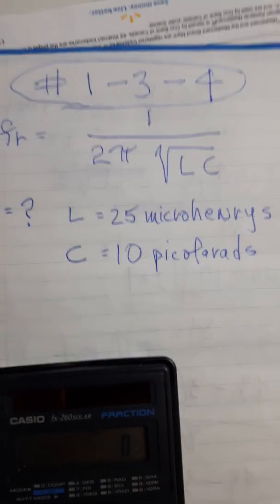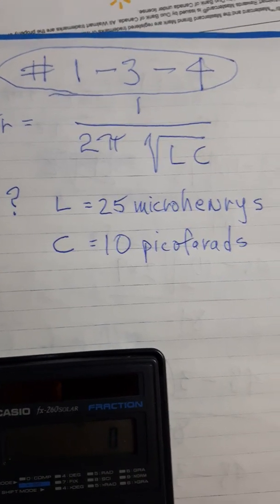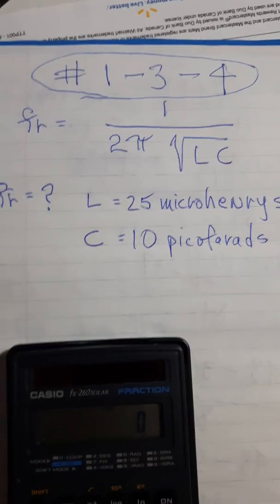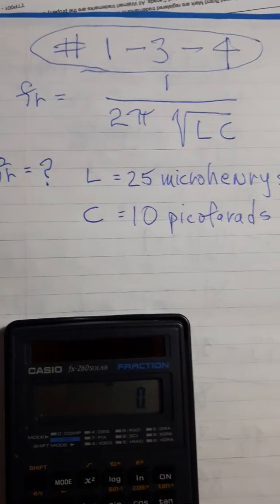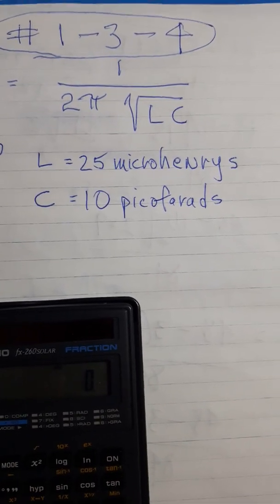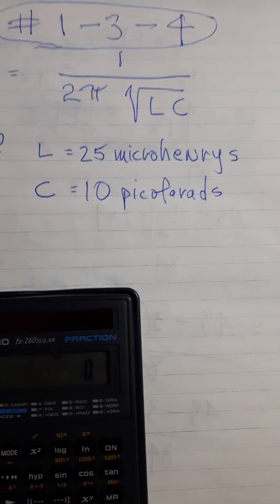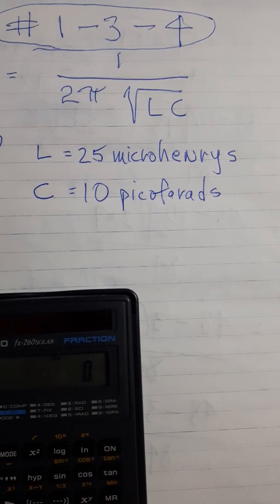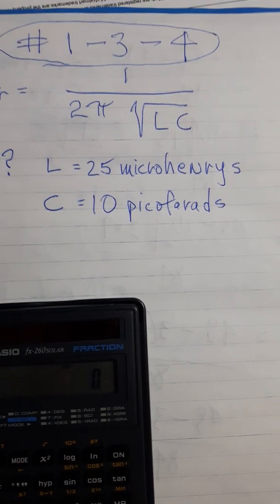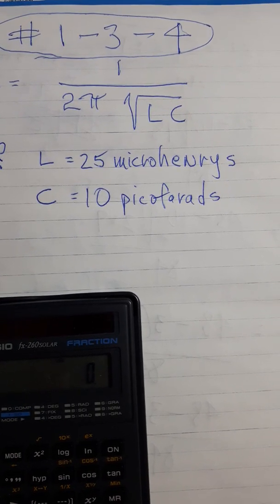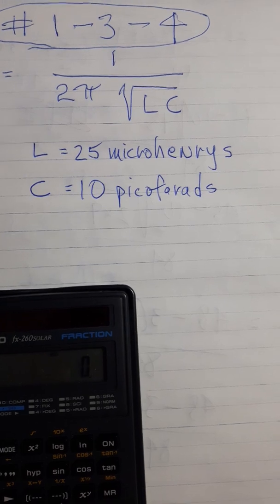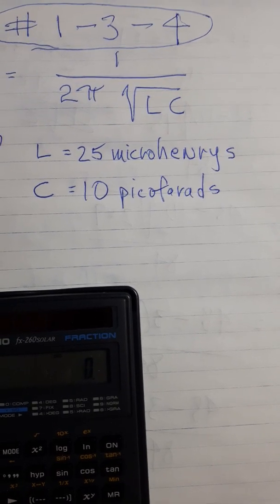Okay, here's question number one, dash three, dash four. What is the resonant frequency of a series RLC circuit? It gives you resistance. Ignore resistance, it does not matter for resonant frequency. L, the inductance, is 25 microhenries. C is 10 picofarads.